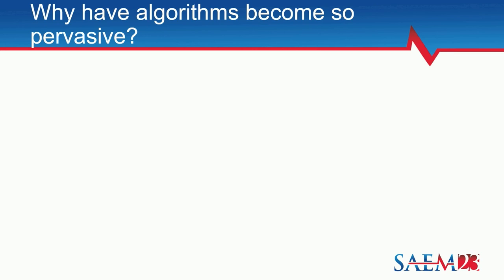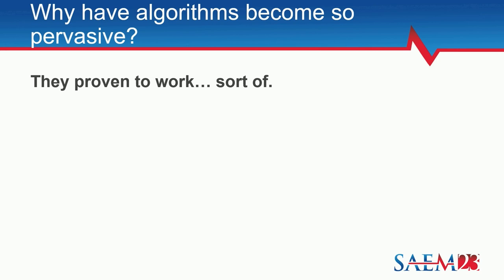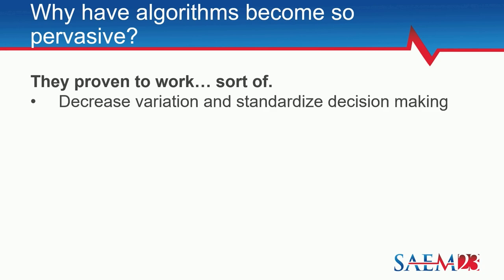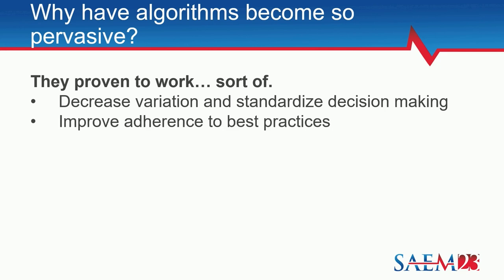So why are they everywhere all of a sudden? The big reason is they're kind of proven to work — they actually do make a lot of things better, sort of. There is good evidence that they do decrease variation and standardize clinical care, which we all know is fairly important. They improve adherence, so not only do you decrease variance, but you also improve the precision of that medical decision.